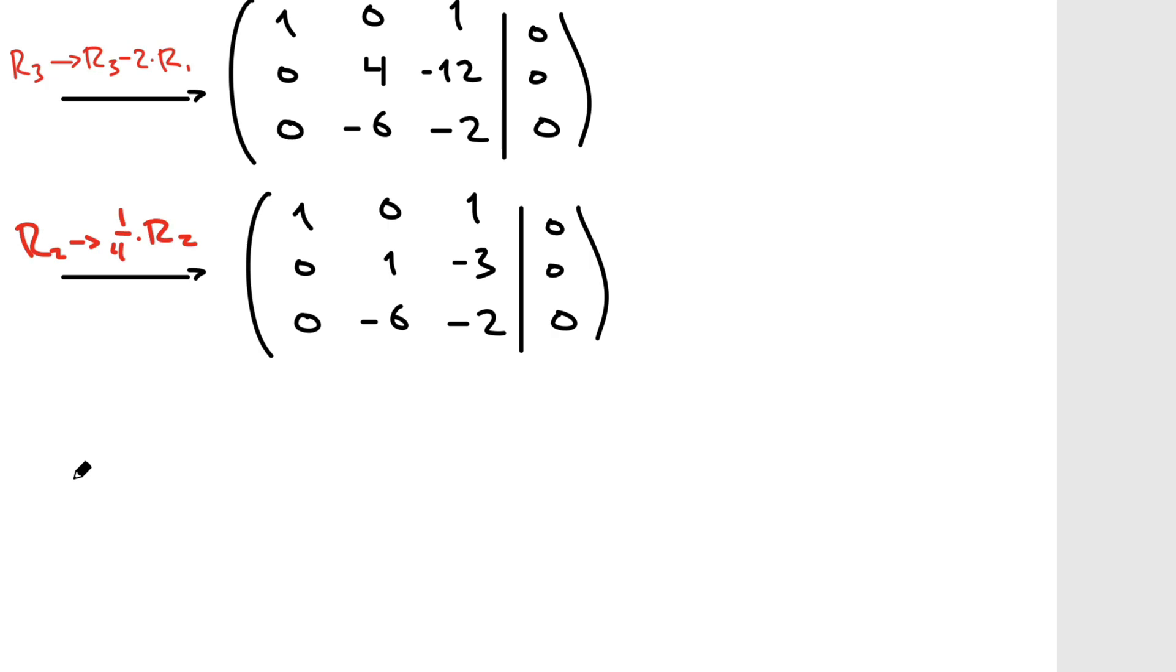So we changed, we only changed the second row. And how did we change it? Well, we divided it by four. This is a four over here. It might be hard to read. So four divided by four is one. Negative 12 divided by four is negative three. And now let's use this negative one to destroy the negative six.